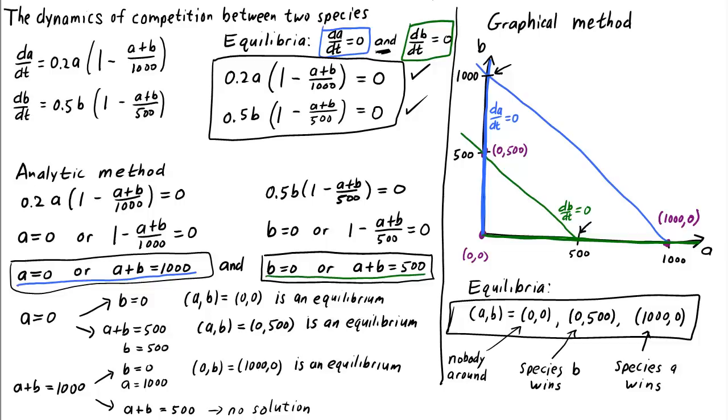We also give special names to the curves dA/dt equals zero and dB/dt equals zero. We call these curves, where one of the variables doesn't change, nullclines. So the curve dA/dt equals zero is called the A nullcline. Nullclines allow us to find equilibria, because the equilibria are the points of intersection between the two nullclines. And they also help us understand the behavior of solutions in the phase plane, since we know that one of the variables doesn't change on a nullcline.